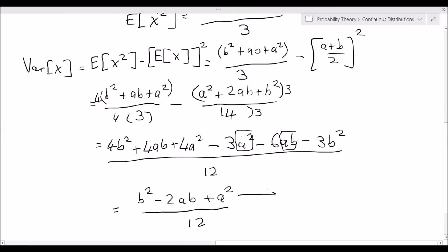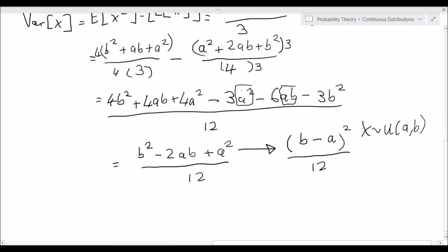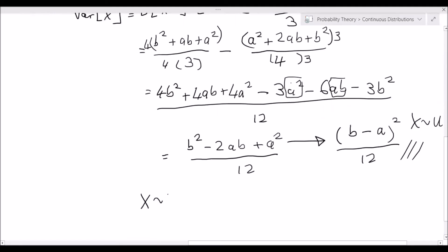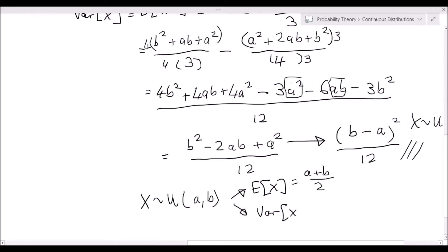So we can factor the numerator b squared minus 2ab plus a squared as b minus a squared, giving us the variance of x equal to b minus a squared over 12, where x is distributed as a uniform random variable with parameters a and b. So always remember: if x is distributed uniformly on the interval a to b, the expected value of x is equal to the midpoint a plus b over 2, and the variance of x is equal to b minus a squared over 12.